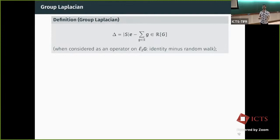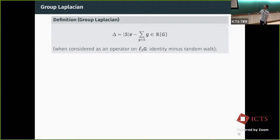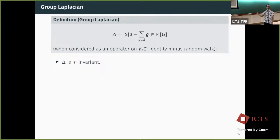In such a group algebra, there exists a Laplacian. This Laplacian can be written very simply as an element of the group algebra: it is the size of the generating set times the identity minus the sum of all generators. This is the un-normalized Laplacian, corresponding to a lazy random walk on the group. Such a Laplacian is self-adjoint because I assumed the generating set is symmetric, so applying star to any generator gives another element of the generating set.